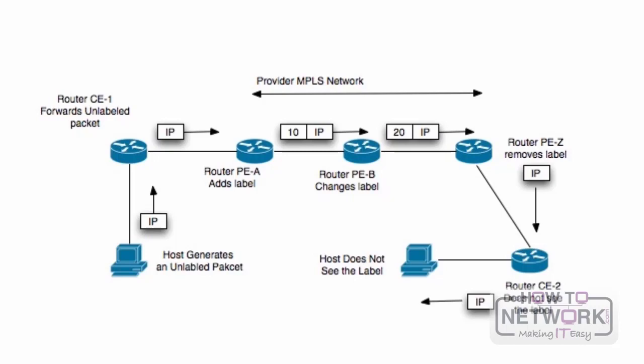The MPLS devices need a way to exchange the labels that will be utilized for making forwarding decisions. This label exchange process is executed using a protocol, the most popular of which is LDP, or label distribution protocol. LDP is a session-based protocol that allows for the exchange of labels; UDP and multicast are used initially to set up the peering, and then TCP ensures reliable transmission of label information.